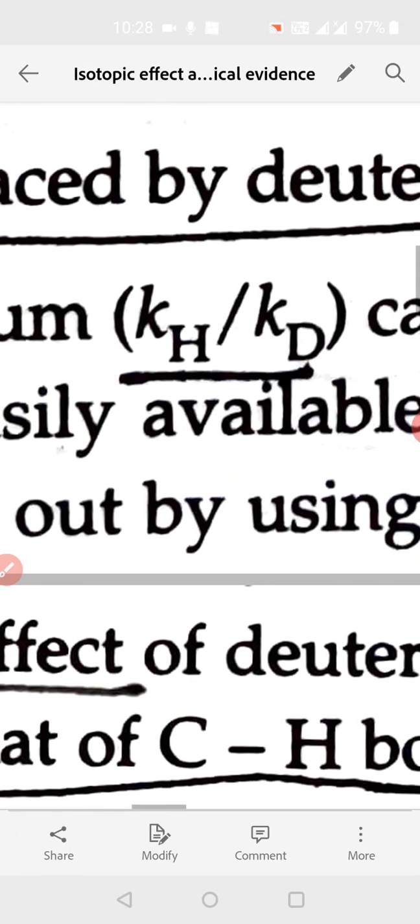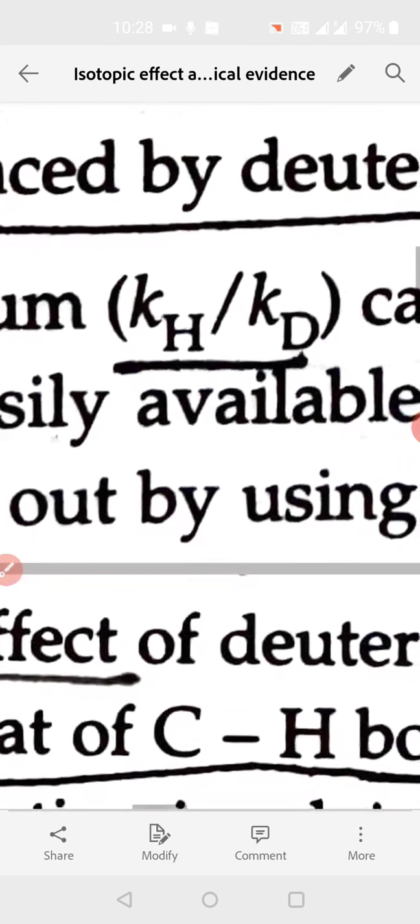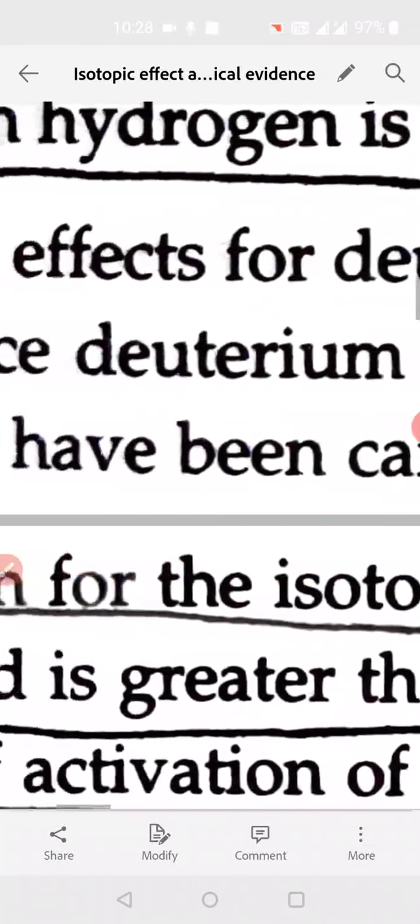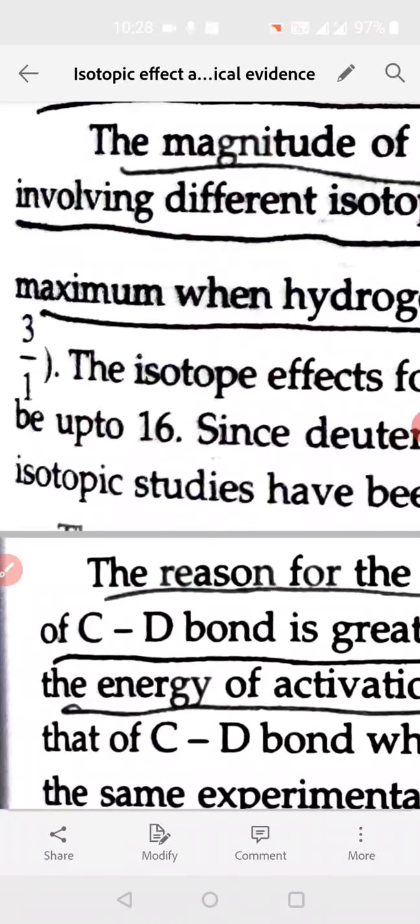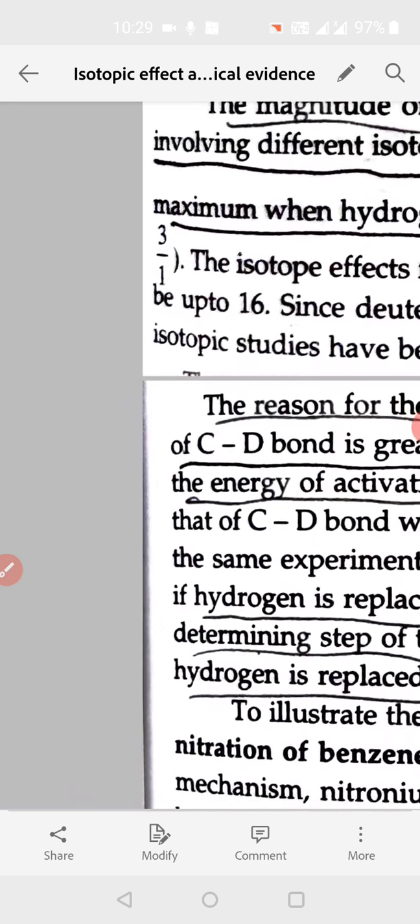So hydrogen reacts 5 to 8 times faster than when deuterium is taken. Similarly, KH upon KD it comes out to be 16. So this ratio KH upon KD it comes out to be 16, this means that hydrogen is more reactive.